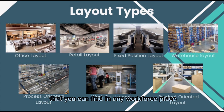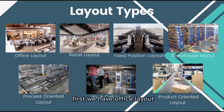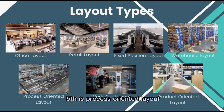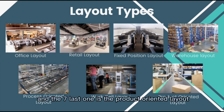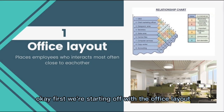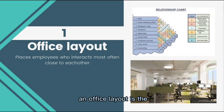In total, there are seven most common layout types you can find in any workplace. First, we have office layout. Second is retail layout. Third is fixed position layout. Fourth is warehouse layout. Fifth is process oriented layout. Sixth is the work cell layout. And the seventh is the product oriented layout.